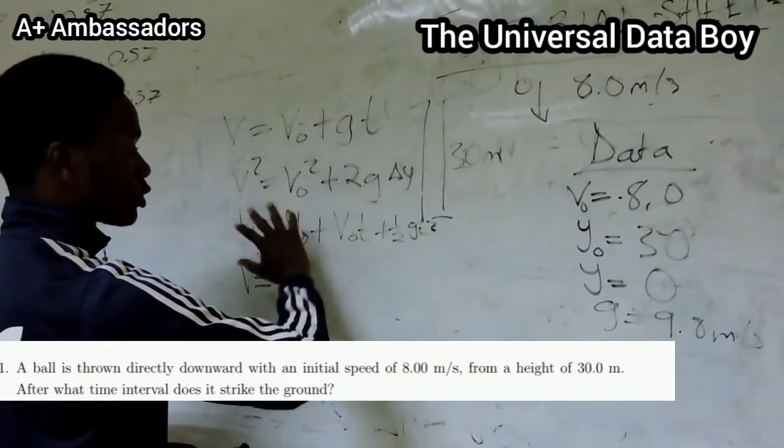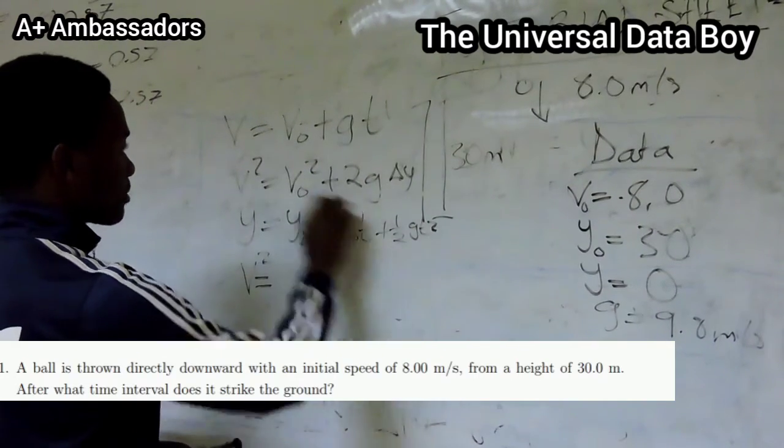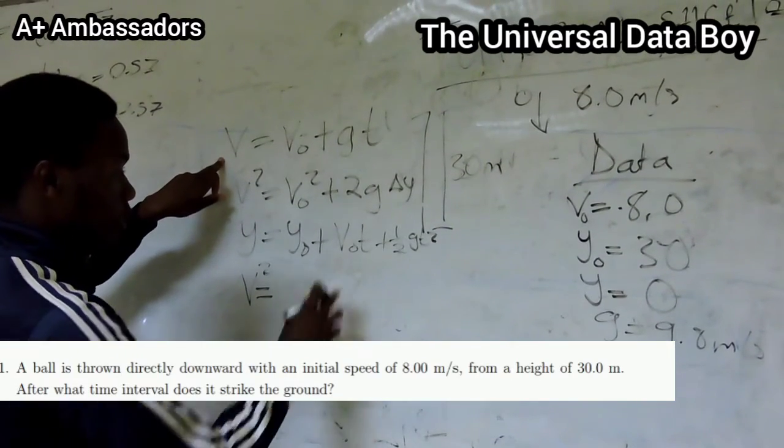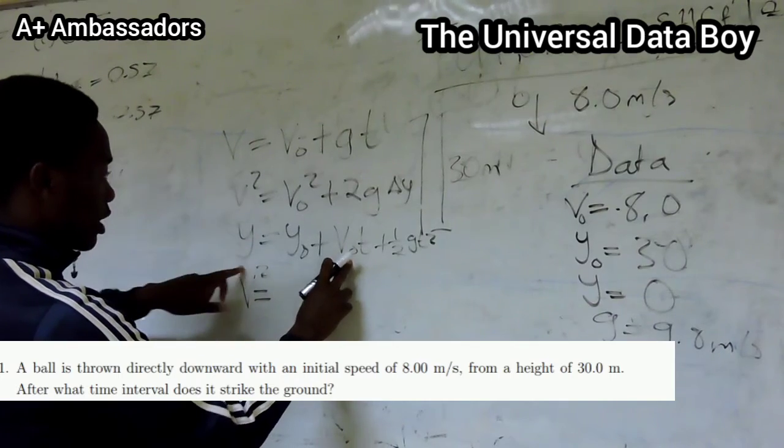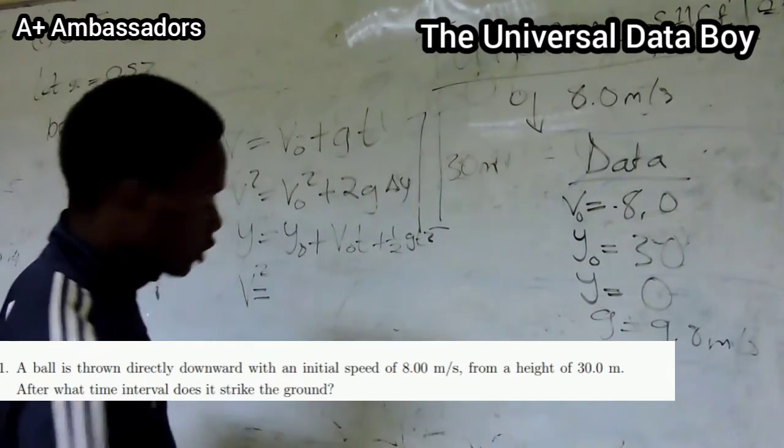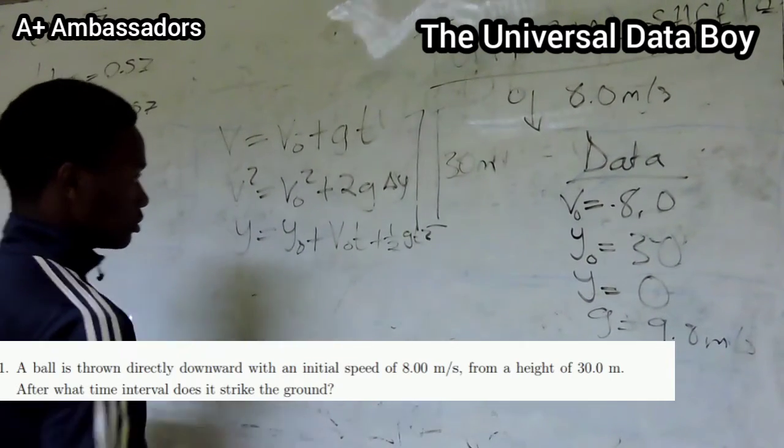Let's go to another one because what we're trying to find here is the time. This one doesn't have time, so it's out. This one has time and this one has time. We don't have the final velocity, but we have the initial velocity and the change in Y, so we're going to stick to this.